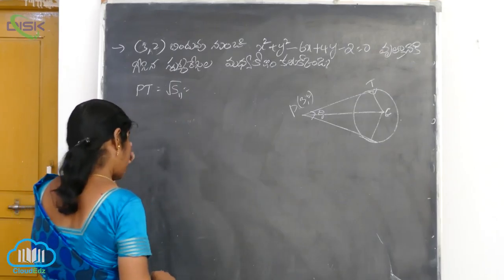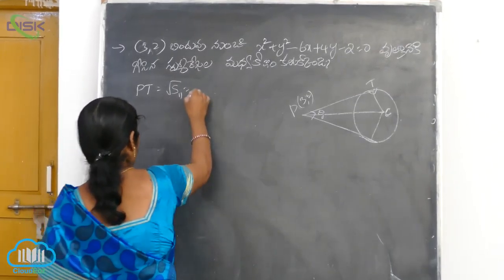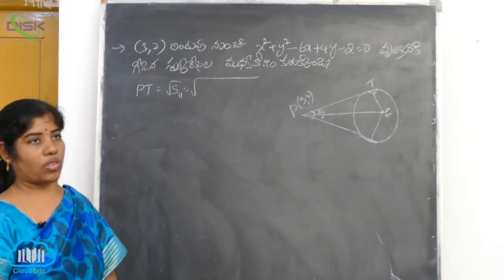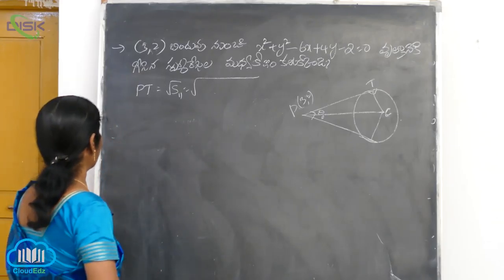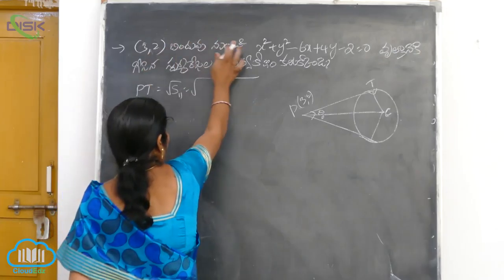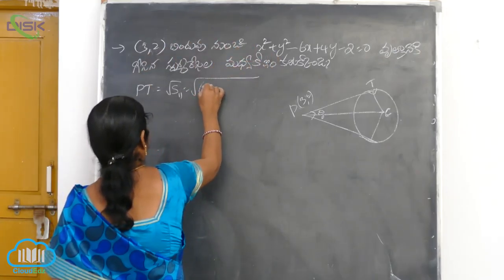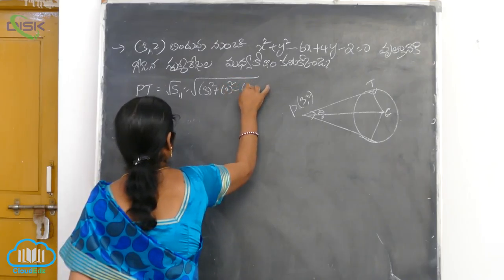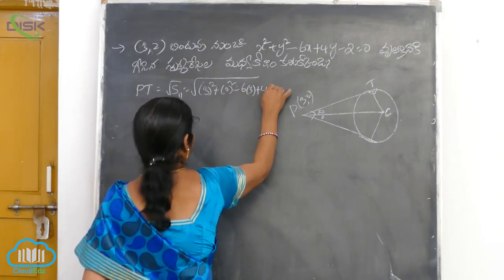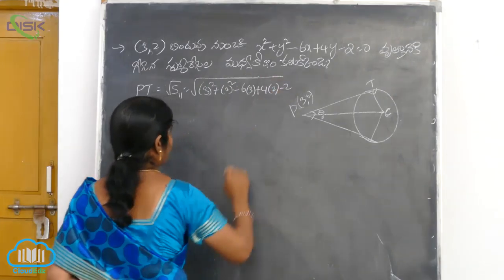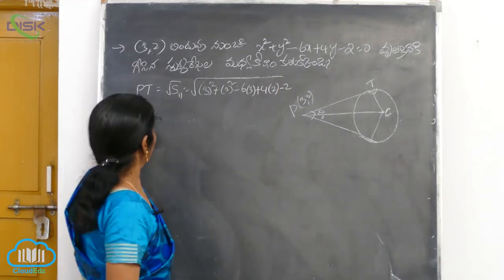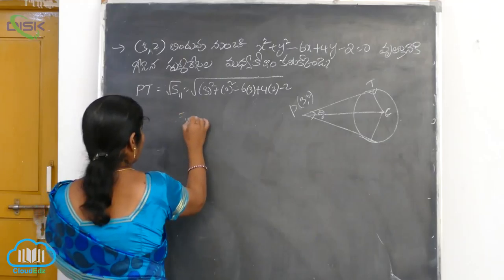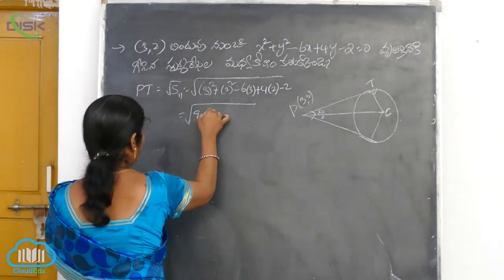S11 — we can see here. We can see root S11. We can see here: 3 square plus 2 square. 6 into 3. 4 into 2. Minus of 2. We can see here — 3 comma 2. 9 plus 4.